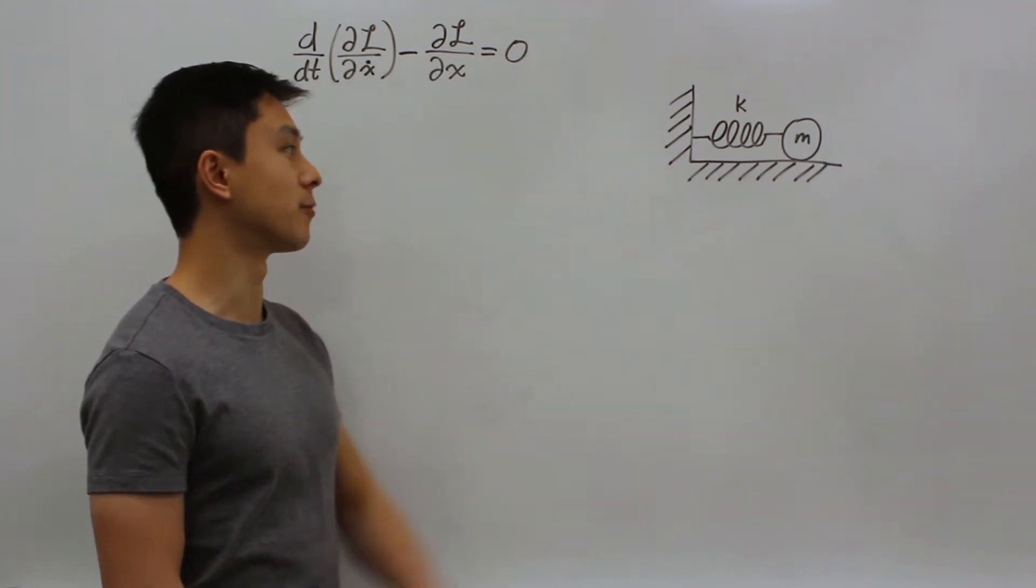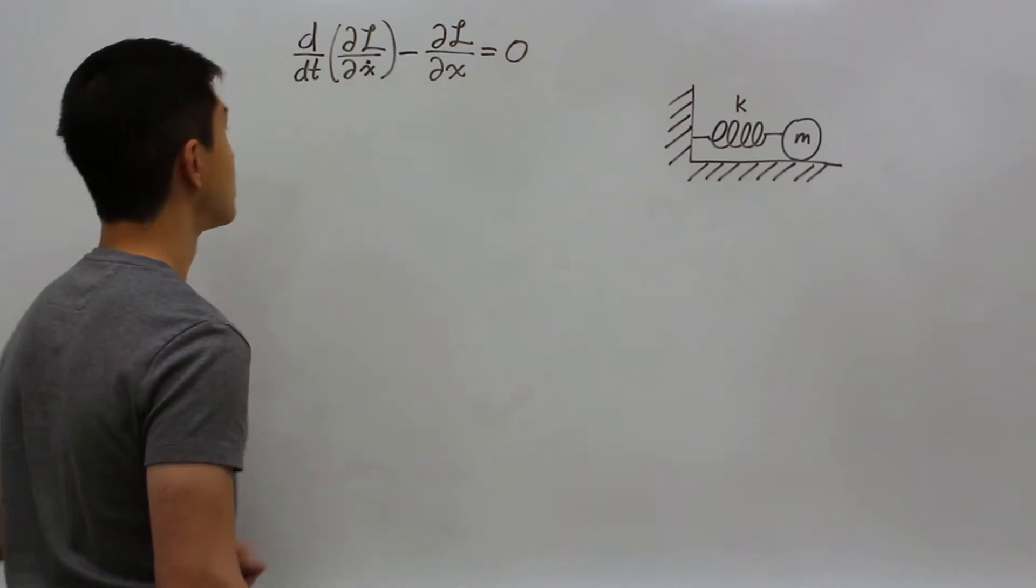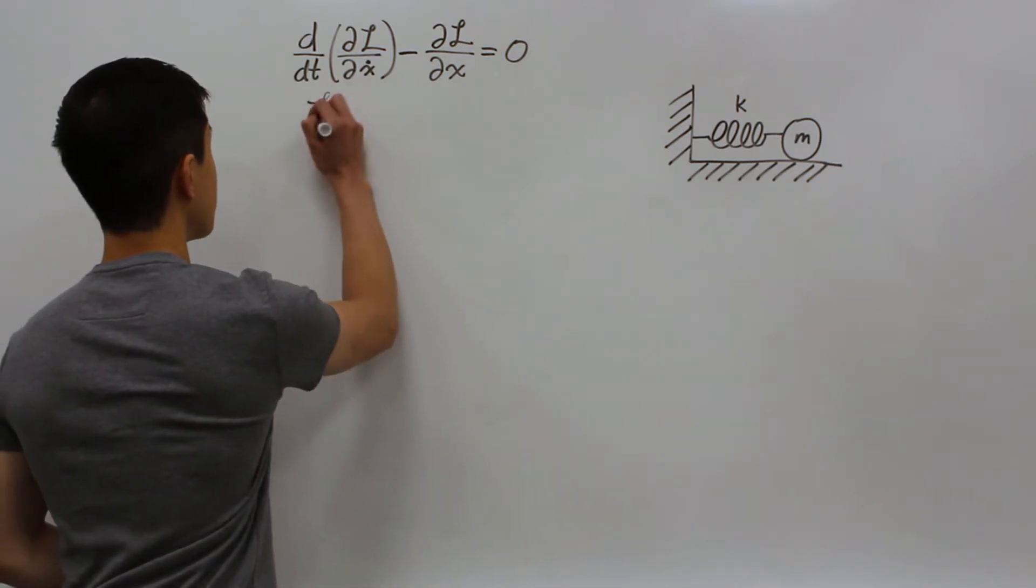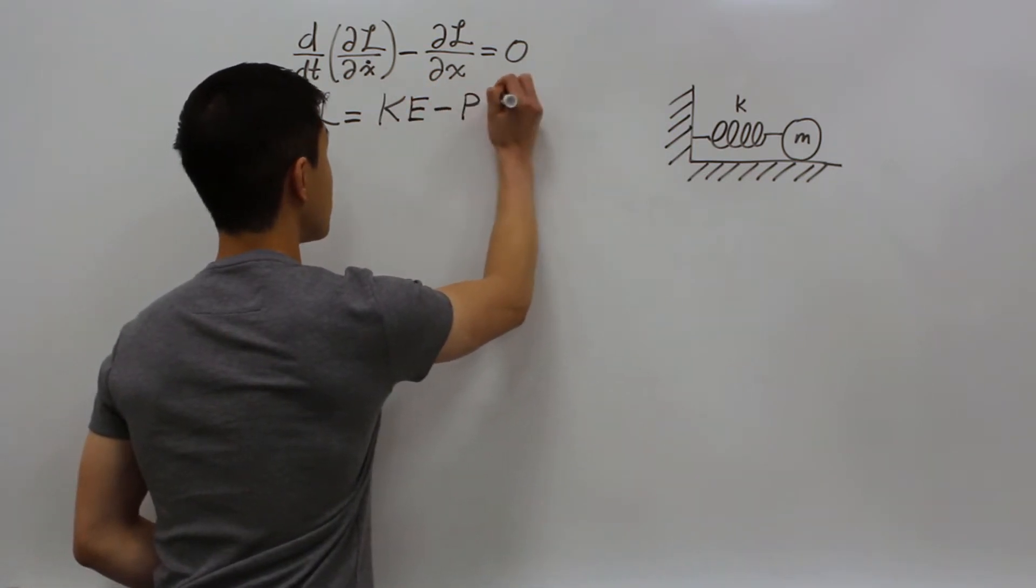How do we find the differential equations of motion for the simple spring mass system using the Euler-Lagrange equation? Our first step is to find the Lagrangian of the system, which consists of the kinetic energy of the system, subtracting the potential energy of the system.